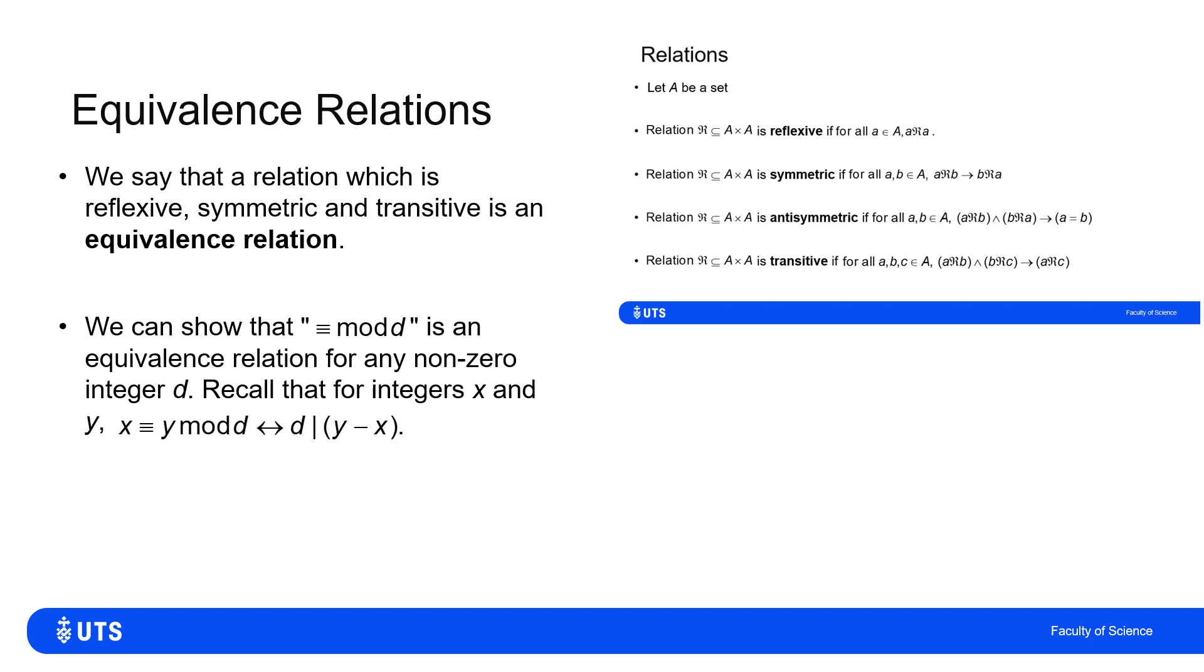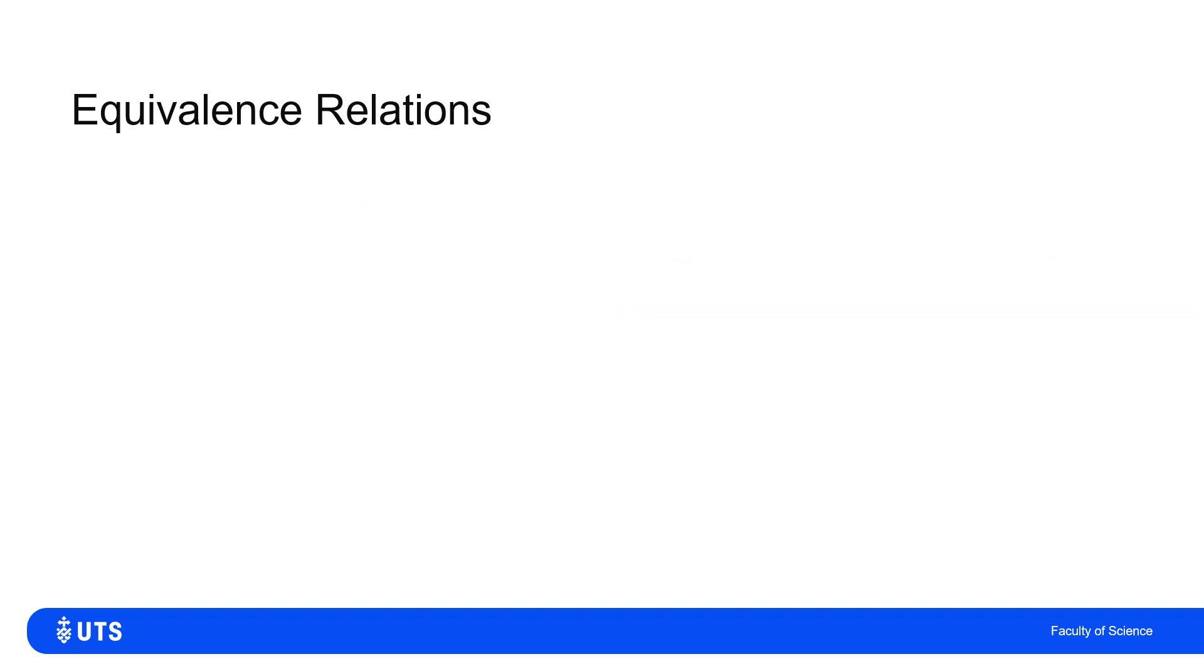An example of this is modular arithmetic. So I can say is congruent mod D or is equivalent mod D, and I will show that that is an equivalence relation. And recall, when I had modular arithmetic, I'd say that X was congruent to Y mod D, or X was equivalent to Y mod D, was the same as saying that D divided Y minus X.